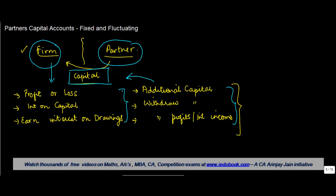So what do we do? There are two methods. One: the firm maintains a fluctuating capital account. These transactions may not all be very significant — maybe some of them occur, some may not. So they maintain a fluctuating capital account.